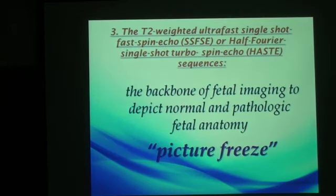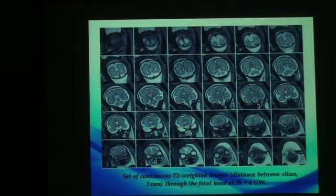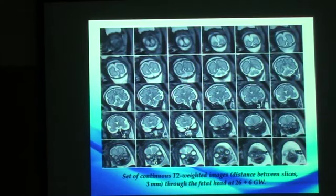The most important sequence of the whole examination is the T2-weighted ultra-fast single-shot fast spin-echo, also called the HASTE or half-Fourier single-shot turbo spin-echo sequence. This is the backbone of fetal imaging. It can give us normal and pathologic fetal anatomy because it can effectively freeze the fetus in utero. It is a very fast sequence; we can acquire one image in less than 500 milliseconds. It gives excellent anatomy in coronal views of the brain from the face to the posterior fossa. Here, we mainly use the steady-state precession sequence and the T2 sequence.